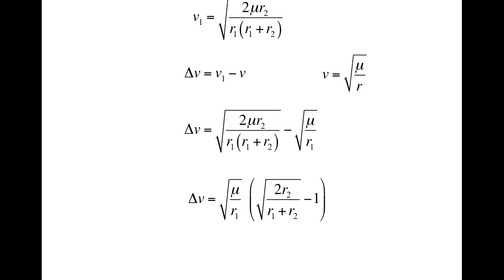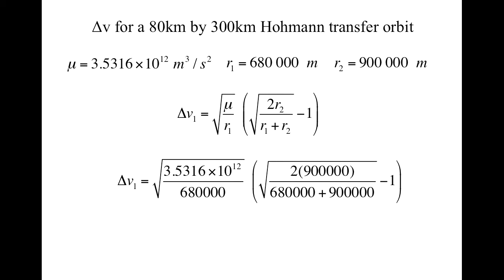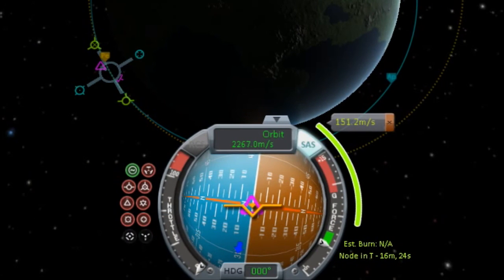Phew, this is it. This will calculate the delta V required for the first burn of any Hohmann transfer. Let's put it to the test. In the video we performed a transfer from an 80 kilometer orbit to a 300 kilometer orbit. Here are the numbers we need. Remember that mu is just the mass of Kerbin times the universal gravitational constant. And that the two r's are the starting and finishing radii measured in meters from Kerbin's center. So here's our formula. We substitute in, get out a calculator, and come up with a predicted burn of 150 meters per second. Let's check what actually happened. There we go, 151 meters per second.